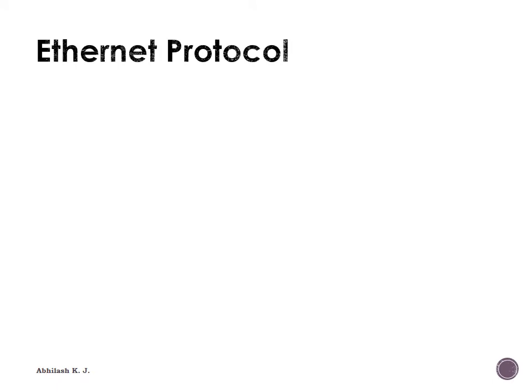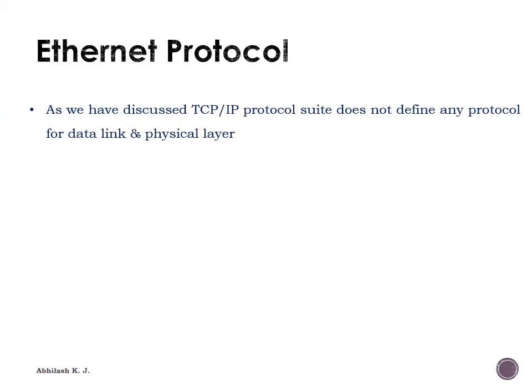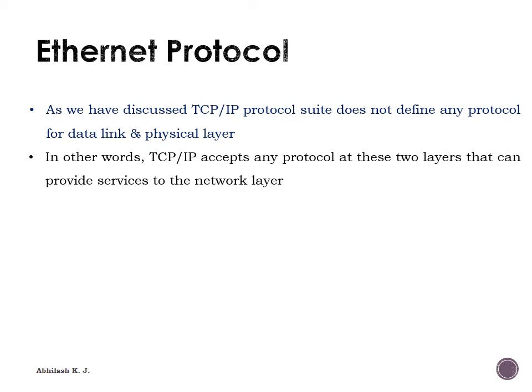Regarding the Ethernet protocol: as discussed in the first module, the TCP/IP protocol suite or the OSI protocol suite does not specify a specific protocol for the data link layer or the physical layer. This means that the TCP/IP suite accepts any protocol at these two layers — data link and physical — which can provide services to the network layer, since it is the responsibility of lower layers to serve higher layers.